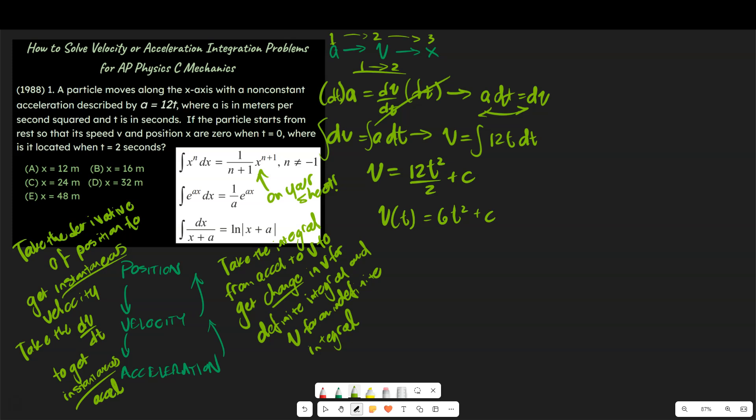Well, we already know something, and this is where we use this information here, where it says if the particle starts from rest so that its speed and position are zero when time equals zero. So what do we know? We know something very specific. We know that at time equals zero, that we set our time equal to zero. We know that this is equal to zero. Why? Because the problem told us that. So we could say essentially zero is equal to zero plus c. Well, then therefore, we can say that zero is equal to c, or the constant of integration.